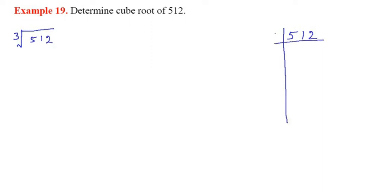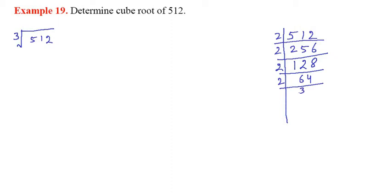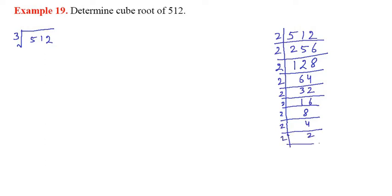We divide 512 by 2 repeatedly. Dividing by 2 gives 256, then 128, then 64, then 32, then 16, then 8, then 4, then 2, then 1. So how many 2's? We count 9 twos in total.